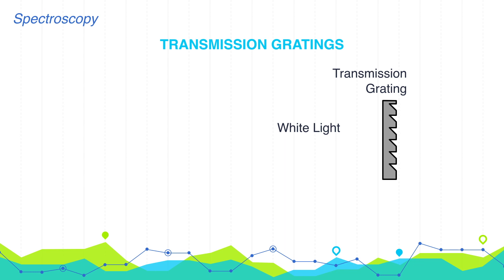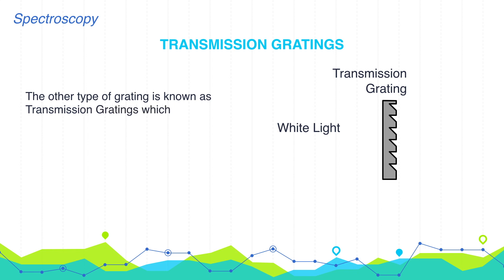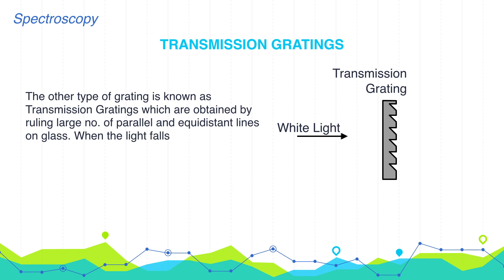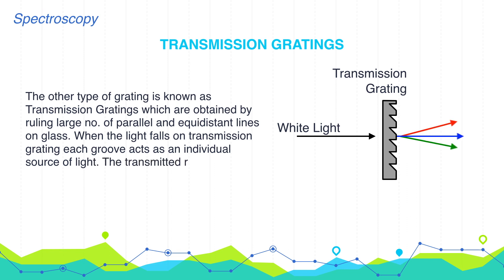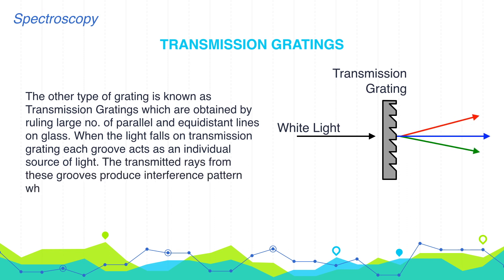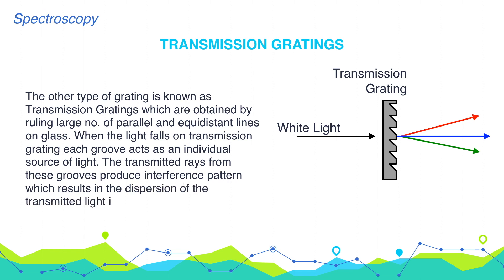The other type of grating is known as a transmission grating, which is obtained by ruling a large number of parallel and equidistant lines on glass. When the light falls on transmission gratings, each groove acts as an individual source of light. The transmitted rays from the grooves produce an interference pattern, which results in the dispersion of the transmitted light into its component wavelengths.